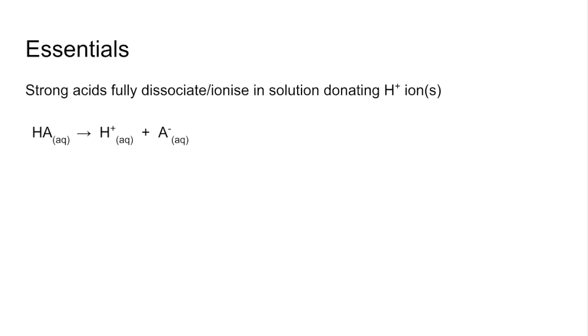That equation represents a monobasic acid such as HCl. Because of the 1:1 ratio in that equation, the concentration of H+ ions is the same as the concentration of the acid.